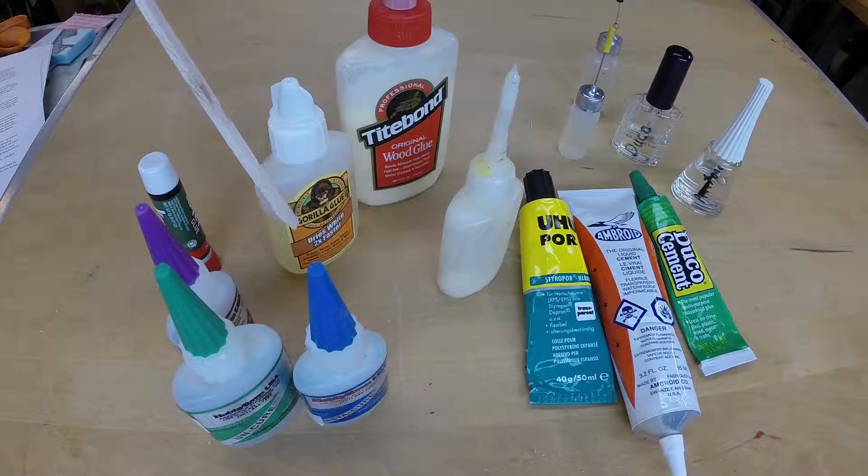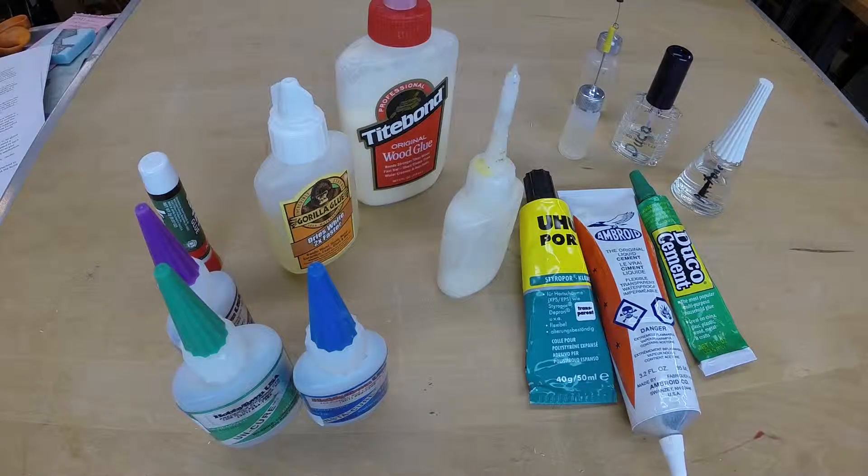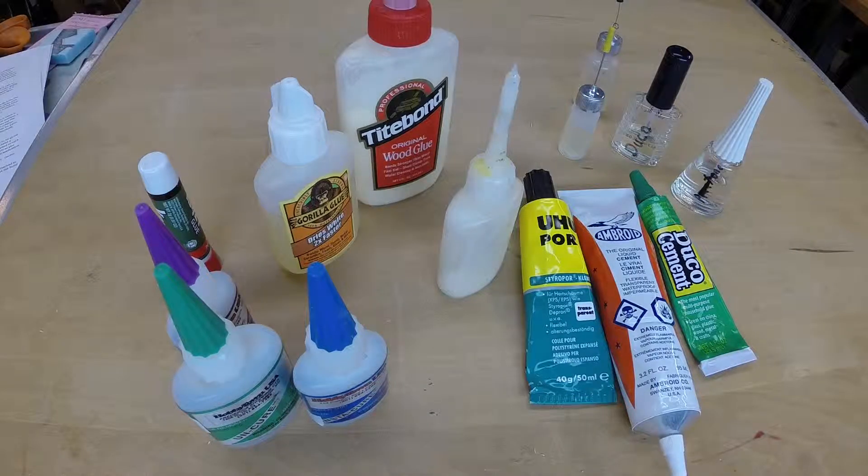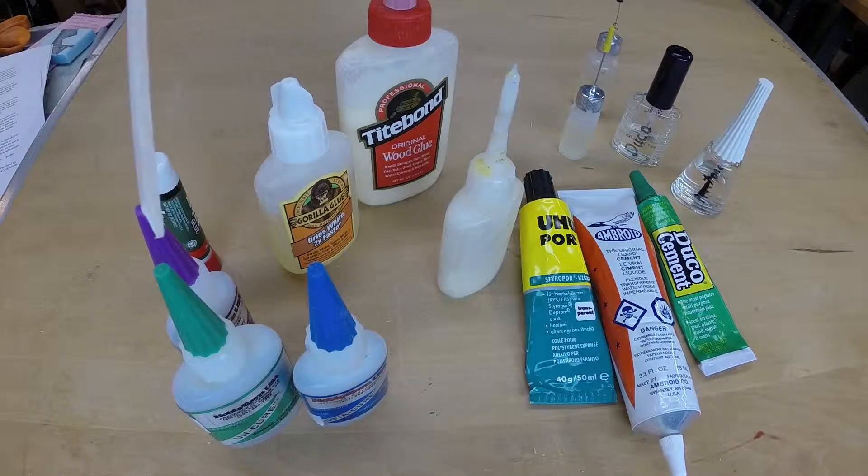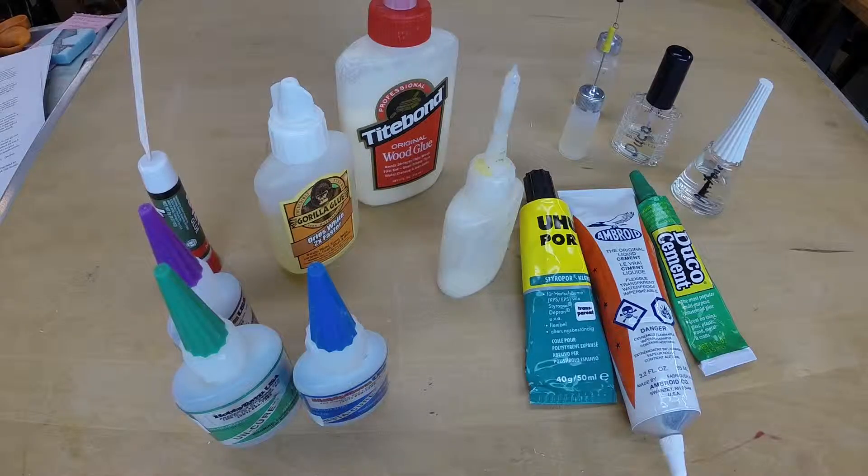The polyurethane glues, such as Gorilla Glue, can be useful for bonding dissimilar materials. For a number of reasons, I am not a proponent of the cyano acrylate adhesives such as superglue for indoor models. These reasons will be discussed later.